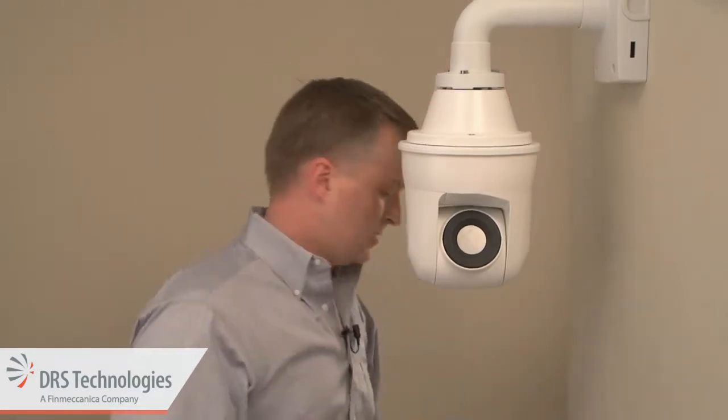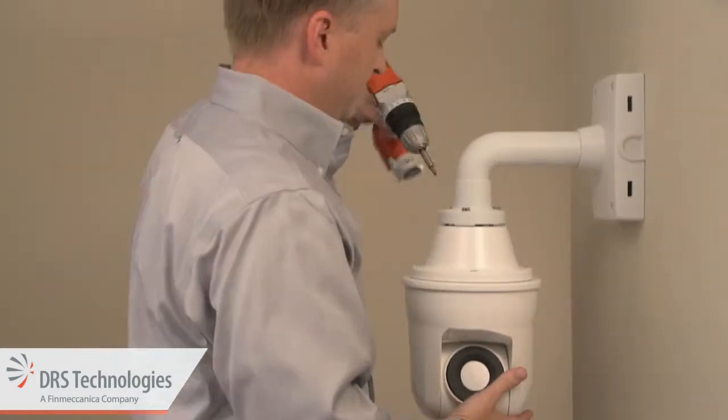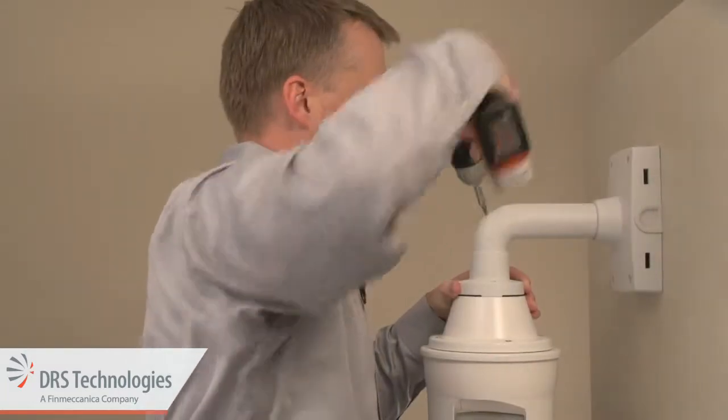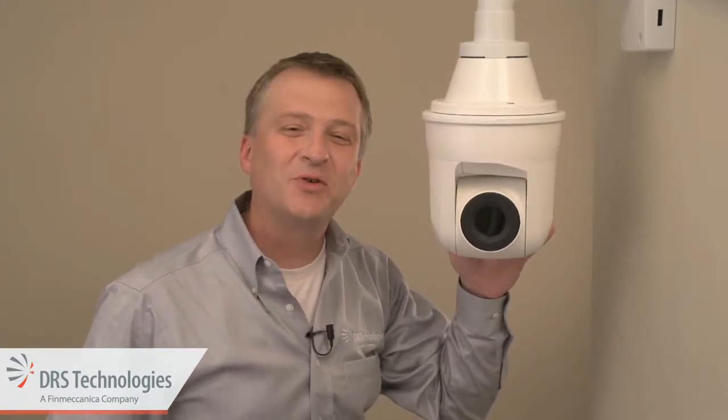Next, tighten the three screws in the access mount to secure the camera. That's it. The Watchmaster IP Ultra is mounted and ready to go. Thanks for watching.